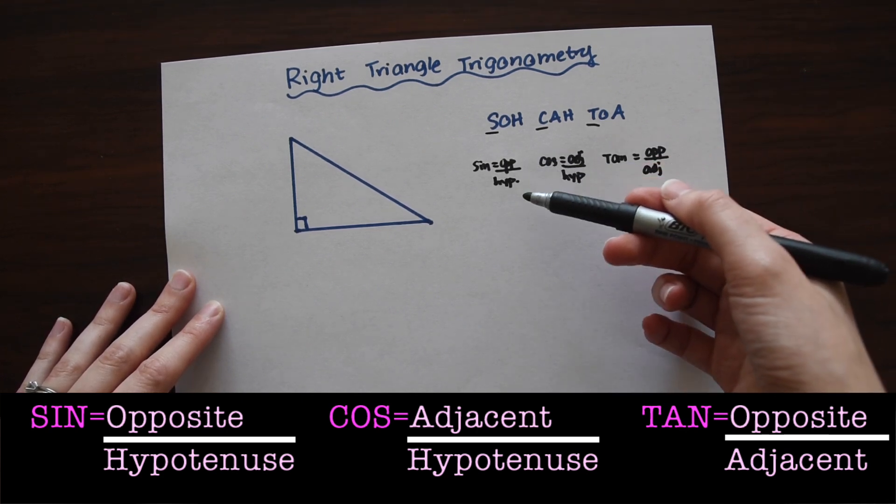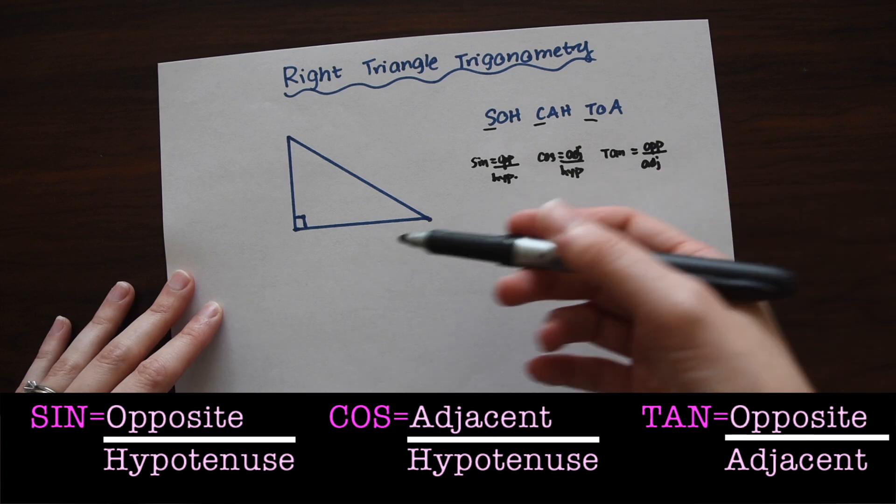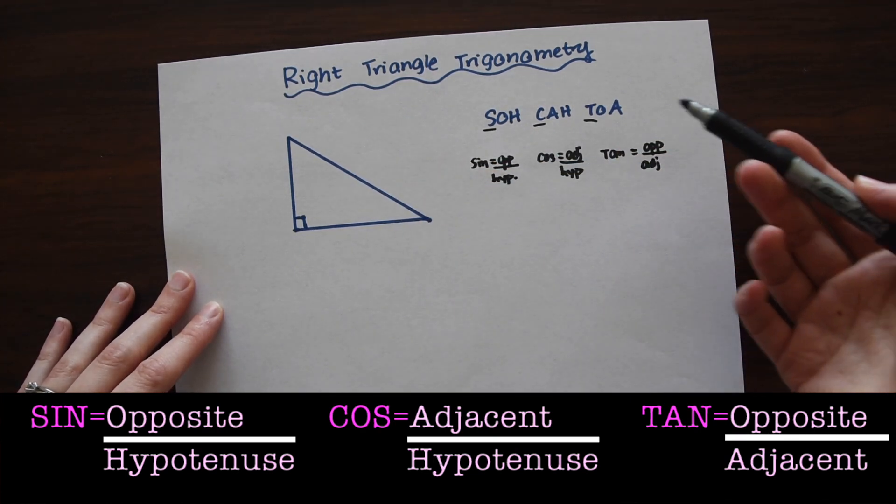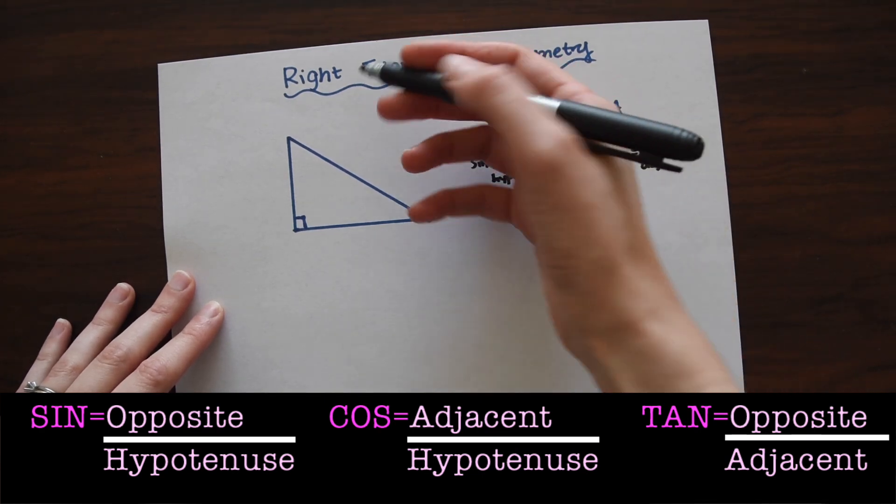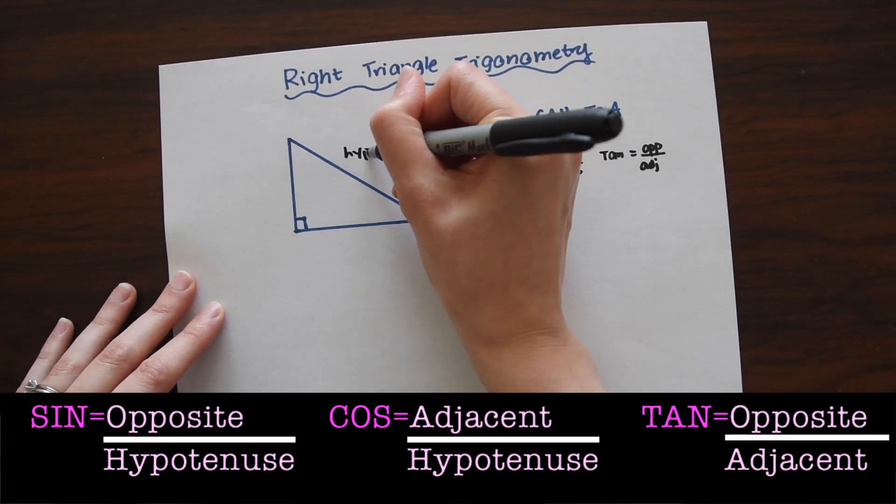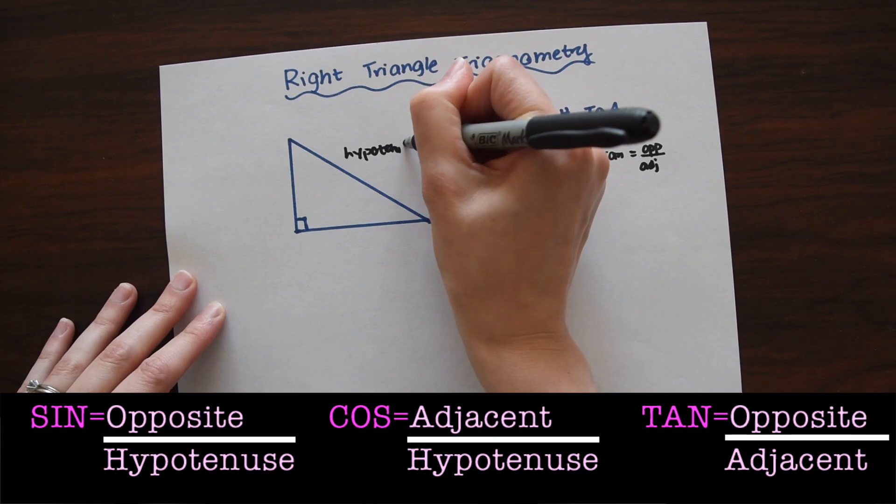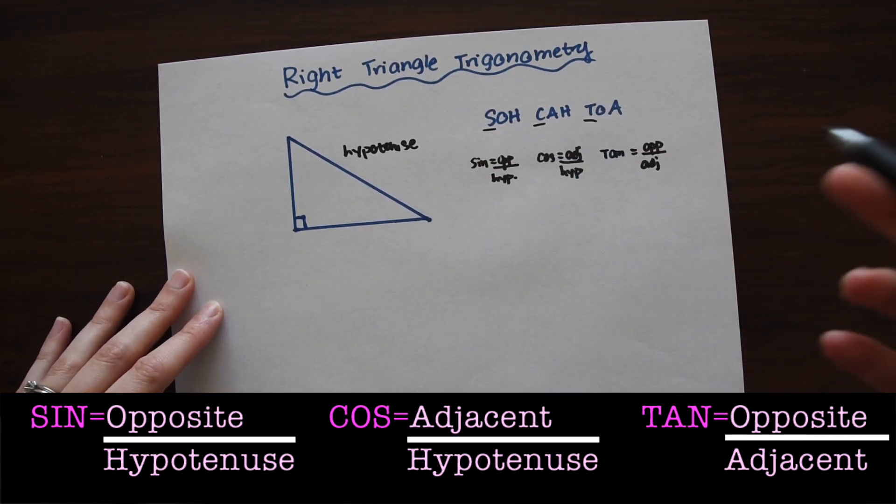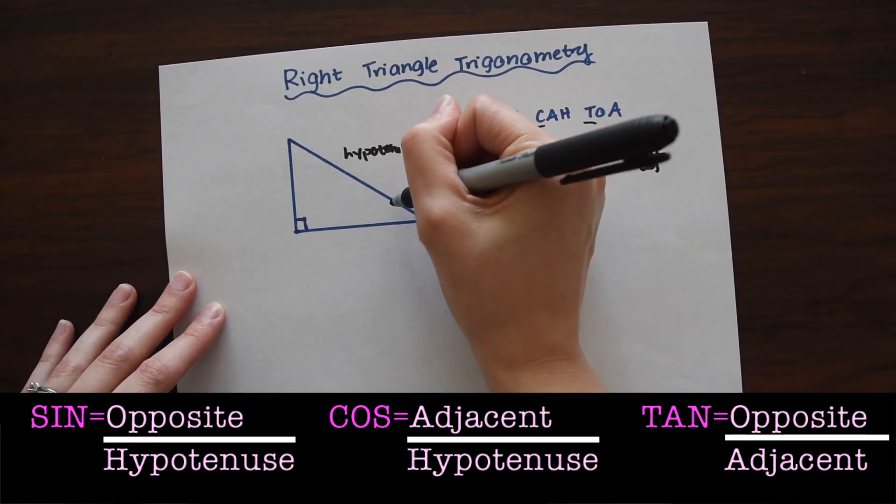So we have opposite, hypotenuse, and adjacent. So let's see on our right triangle here where these different fields fit in. So the longest side is always going to be the hypotenuse. And the opposite and adjacent are always going to depend on where the angle is, which angle you're trying to find.